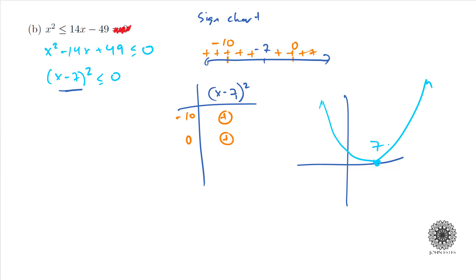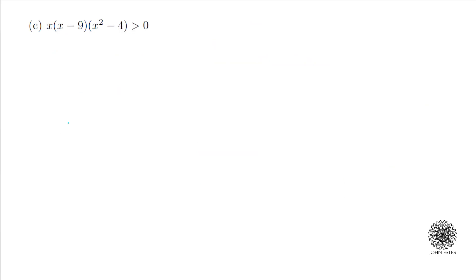So you can see this expression is always positive except exactly at 7. If you graph this parabola it hits the x-axis exactly at 7, and everywhere else it's positive. So when asking when it's less than or equal to 0, the only possibility is when it equals 0, which is at x = 7. Since we're writing in interval notation I'll write 7 in curly brackets to mean the set containing only the number 7.